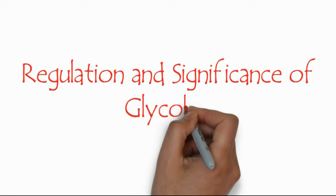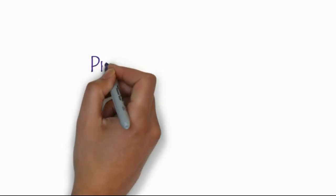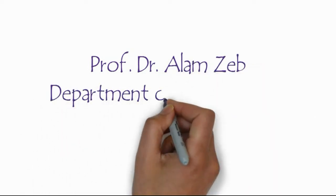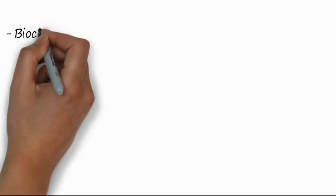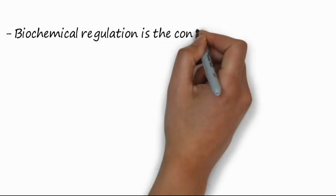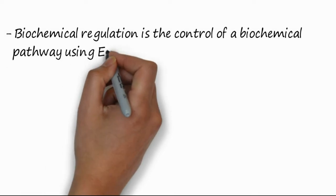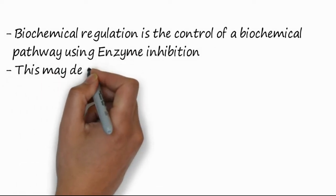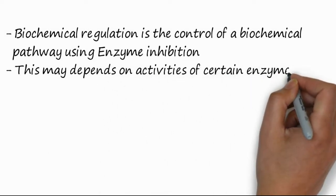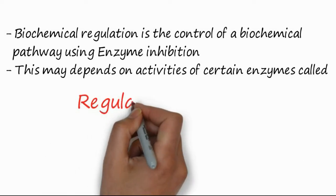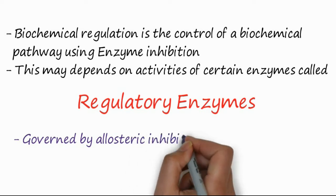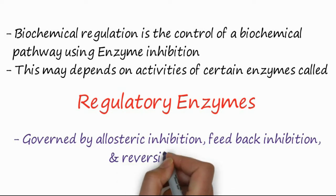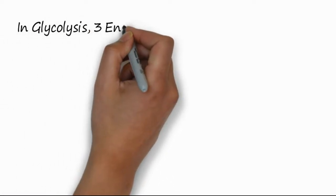This lecture covers regulation and significance of glycolysis. My name is Dr. Alamzev, I am a professor at the Department of Biochemistry, University of Malacca. First we need to know what is regulation. Biochemical regulation is the control of a biochemical pathway using enzyme inhibition. This depends on activities of certain enzymes called regulatory enzymes, which are governed by allosteric inhibition, feedback inhibition, and reversible inhibition.